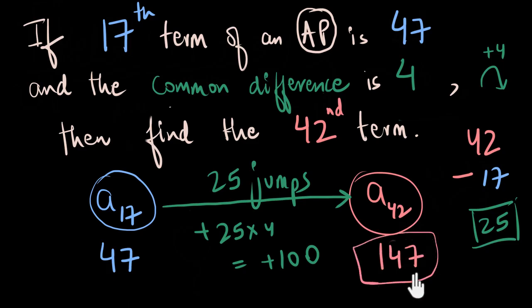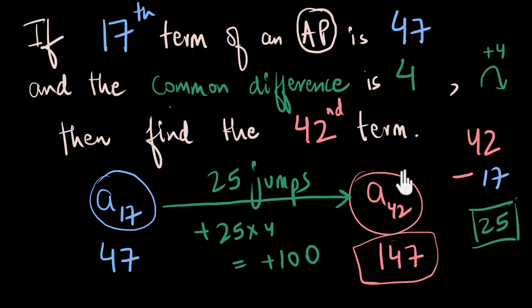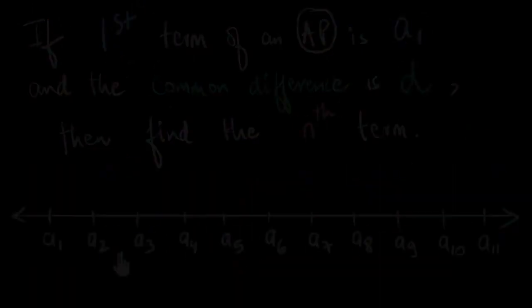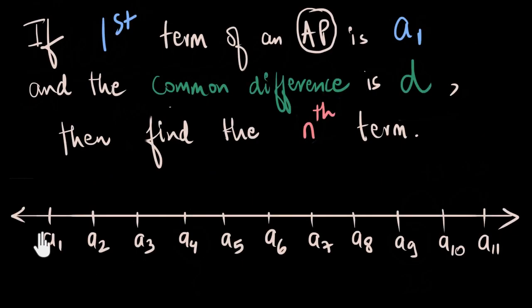That's the pattern we see in all such problems. We start with a starting point and need to reach a finishing point. All we need to do is find how many jumps we need to take from the starting point to the finishing point. Now let's take this number line idea back to the nth term formula and see if we can make sense of it.